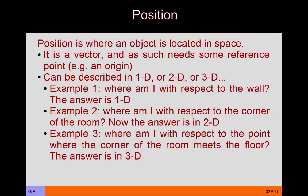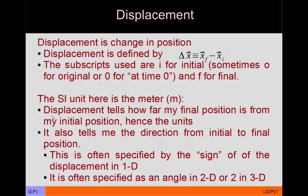Especially in 3D — and even in 2D — objects are extended. So you have to pick a particular point to represent where that object is located. If we wanted to know where someone is located within a room, we might specify the exact point in the middle of their body or at their center of mass, or the point between their eyes. The position can change for an object, and that's just what happens when an object is moving.